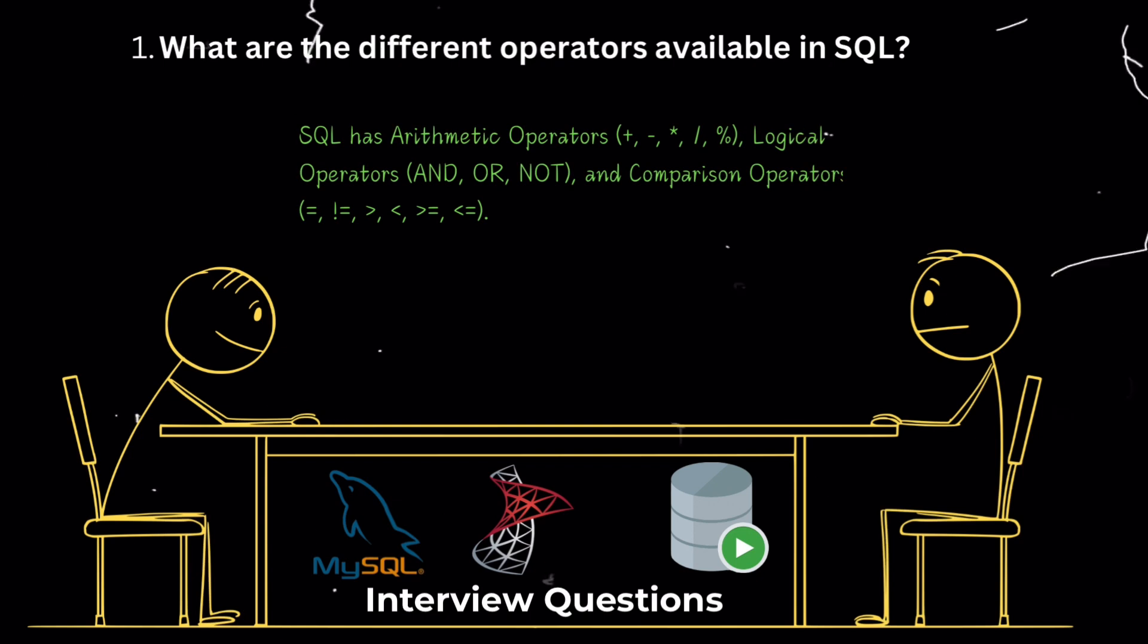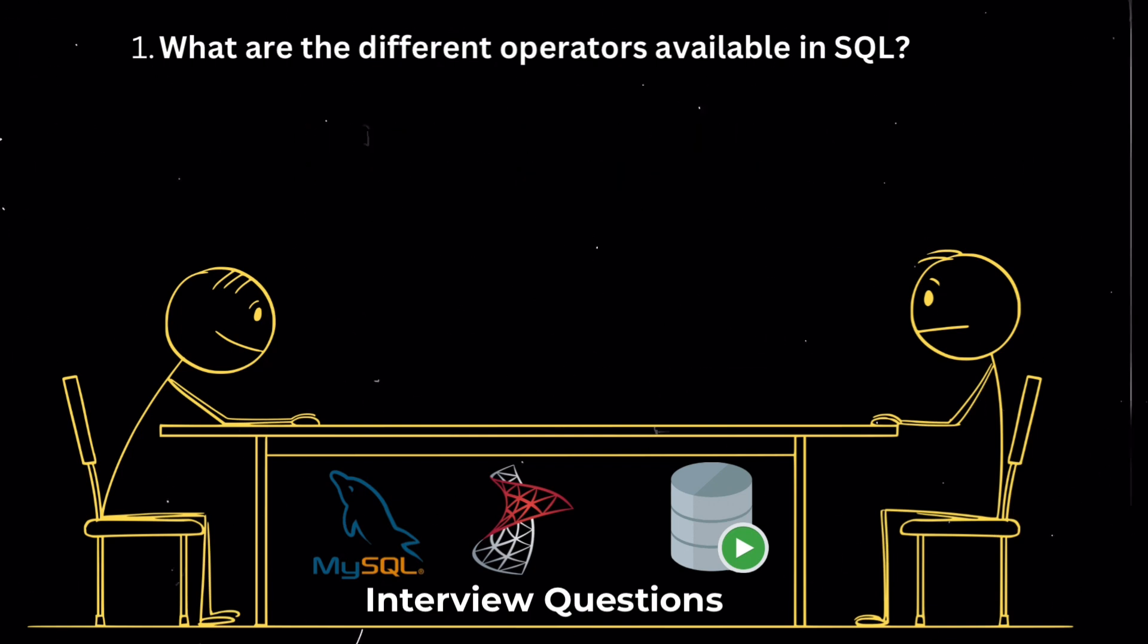What are the different operators available in SQL? SQL has three main types of operators. Arithmetic operators plus percent logical operators and OR not comparison operators equals equals greater than less than greater than equals less than equals.